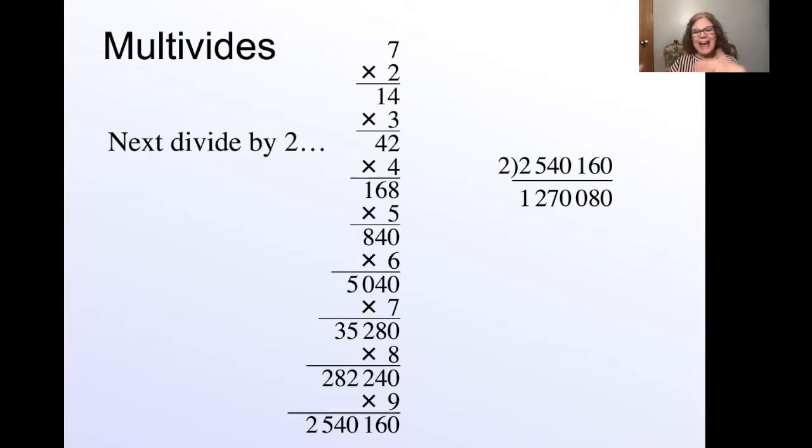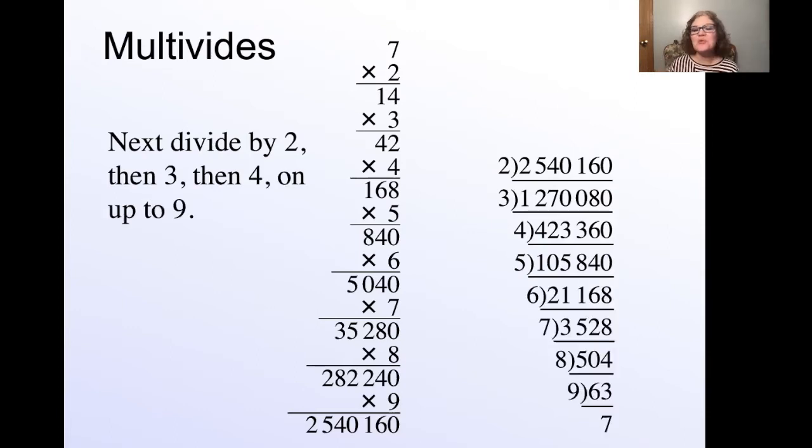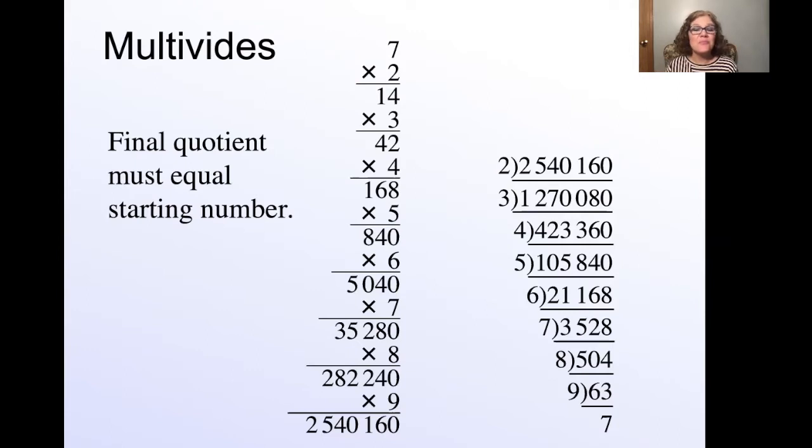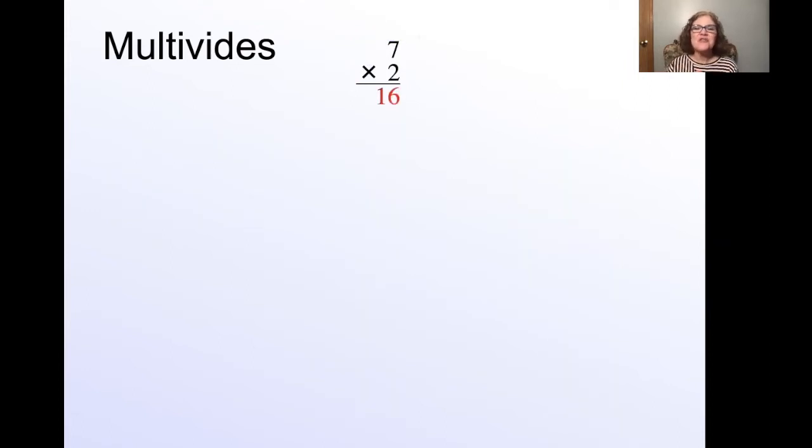Now you take that answer and you divide it by three. You take that answer, divide it by four, and so forth, all the way through nine. Now you know you've done the problem correctly if your answer is the same number as what you started with. There is that self-check. So as you can see, the problem will be if you got a problem wrong early on. So if I said seven times two is 16 versus 14, you can see how the rest of the problems are going to be all wrong, and the child having to go all the way back up to the beginning to find their error can cause a lot of stress. So with my children, I had several adjustments that I made to multivide to make it easier for my kids, and I'm going to share those things with you.